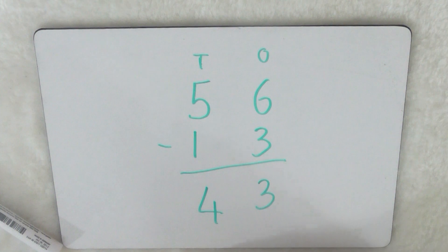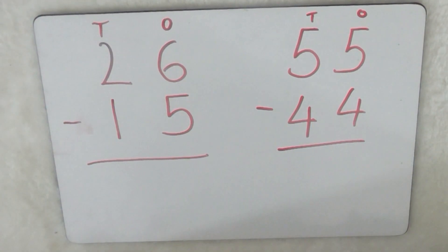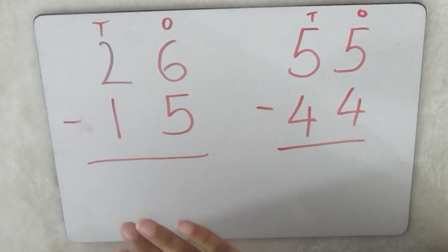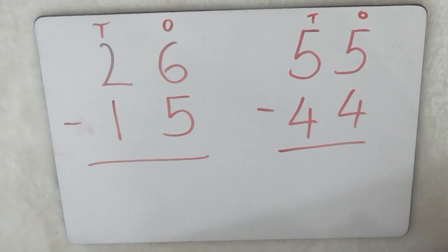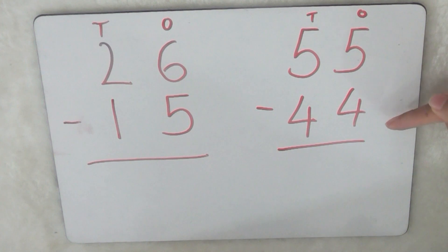Now it's going to be your turn. Okay, so I have labeled them with the ones and tens. The first one is 26 take away 15, and the second one is 55 take away 44. Remember to always start from the ones and then go to the tens. Off you go.